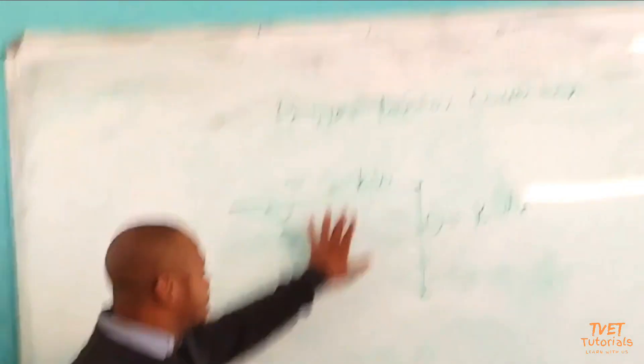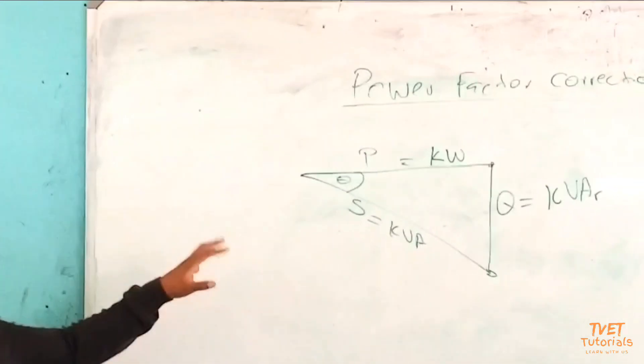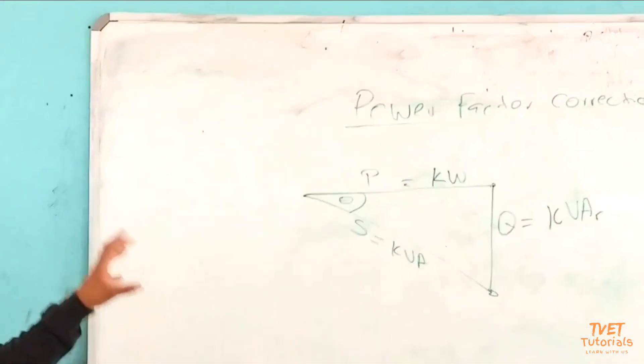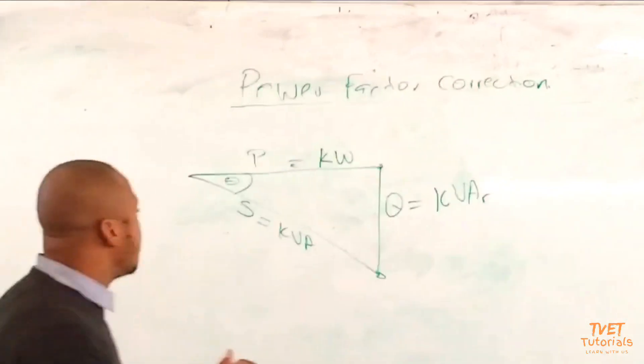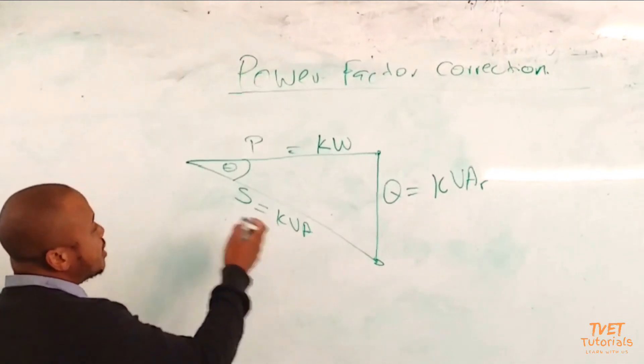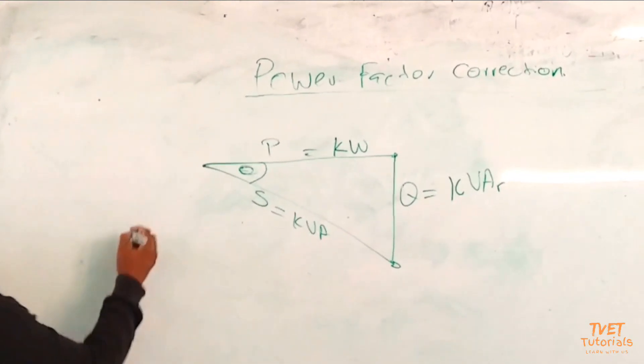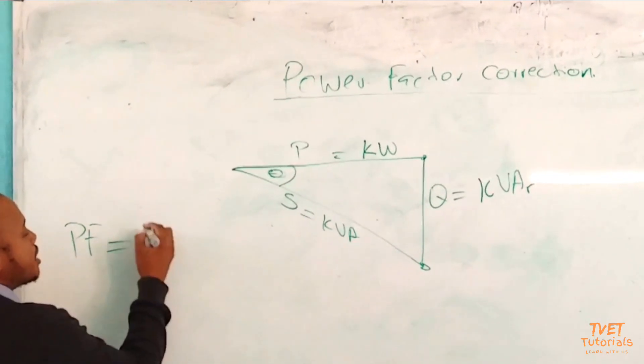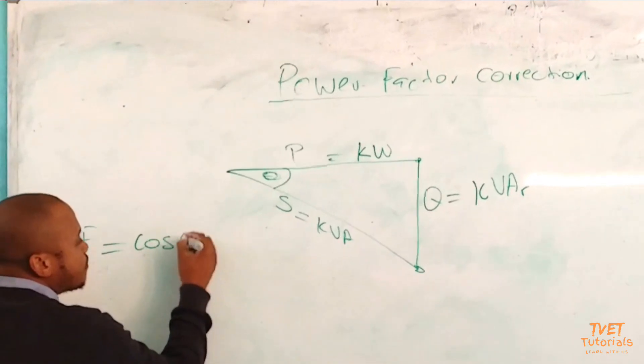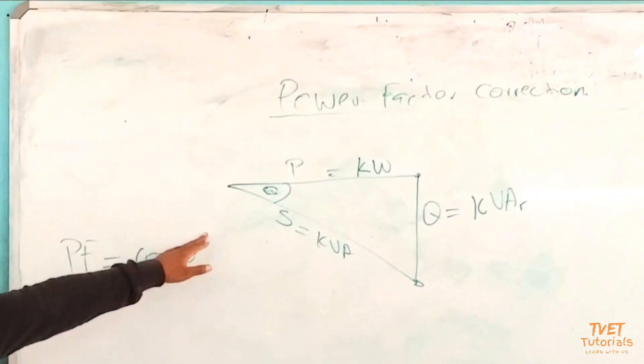So these are the three different types of powers that we will be looking at, and then we will be looking to see how these affect our consumption of electricity in any connection. If we take cos θ, the power factor P is always equal to the cos of that particular angle theta.